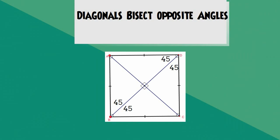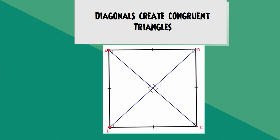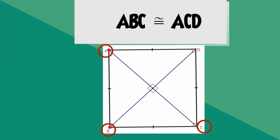The diagonals also bisect opposite angles and create equal 45-degree angles. As a result of the diagonals bisecting opposite angles, they create congruent triangles: triangle A, B, and C is congruent to triangle A, C, D. Finally, a square could be described as a rhombus with four right angles.